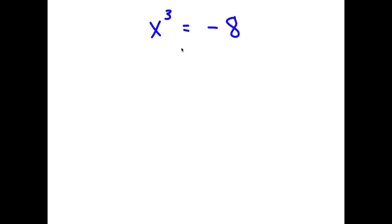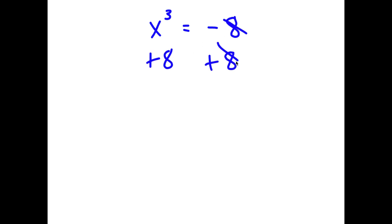In this problem, I have x to the power of 3 is equal to negative 8. To solve this, I'm going to first start by adding 8 on both sides. So then I have x to the power of 3 plus 8 is equal to 0.